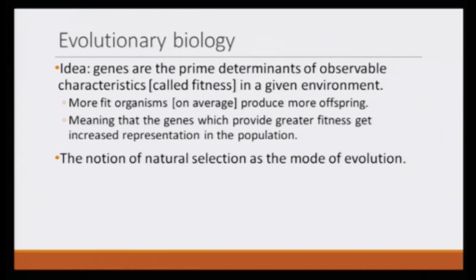What is the basic of evolutionary biology? The idea is very simple: genes, the genetic code present in all animals, are the prime determinants of their observable characteristics. This observable characteristic is called fitness. More fit organisms on average typically have better reproductive success — they produce more offspring, meaning the genes which provide greater fitness get increased representation in the population.